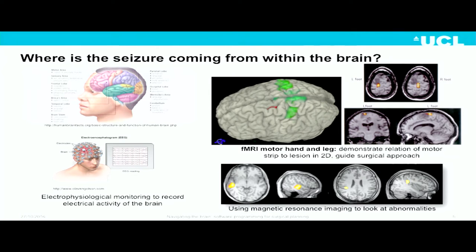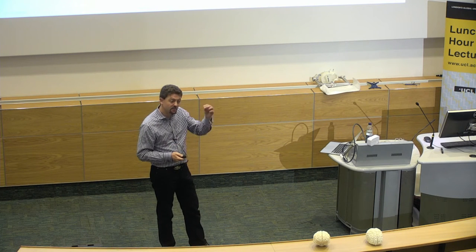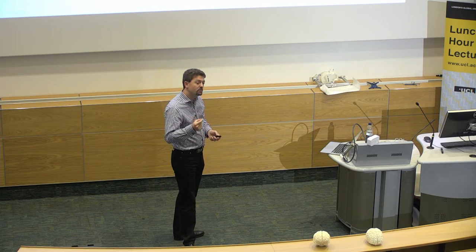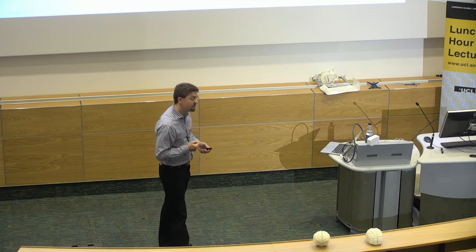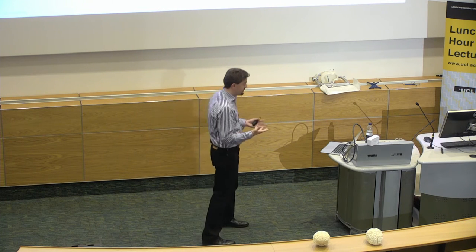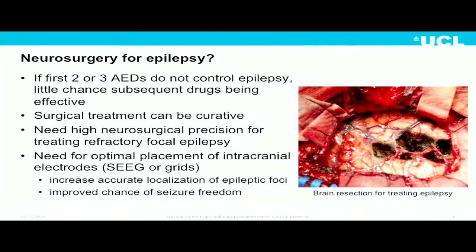For cases where we cannot identify the focus properly, the main approach is to use implanted electrodes in the brain — intracranial electrodes. This is done to more precisely localize where the focus is coming from, with the idea that you would then be able to resect that part of the brain. Surgery can be curative for the 30% of the population where anti-epileptic drugs don't work, which is why this very invasive clinical investigation is performed. However, if the epileptic focus is distributed across the brain rather than in one location, intervention may not be possible.